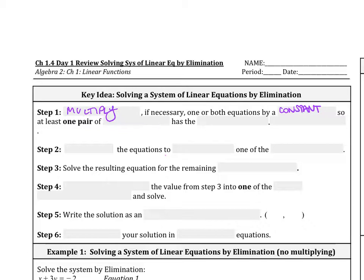So at least one pair of like terms has the opposite coefficient. For example, if we're trying to eliminate x's and we have a 7x and an x, we need to multiply by a negative 7 so that way this is a negative 7x inside.